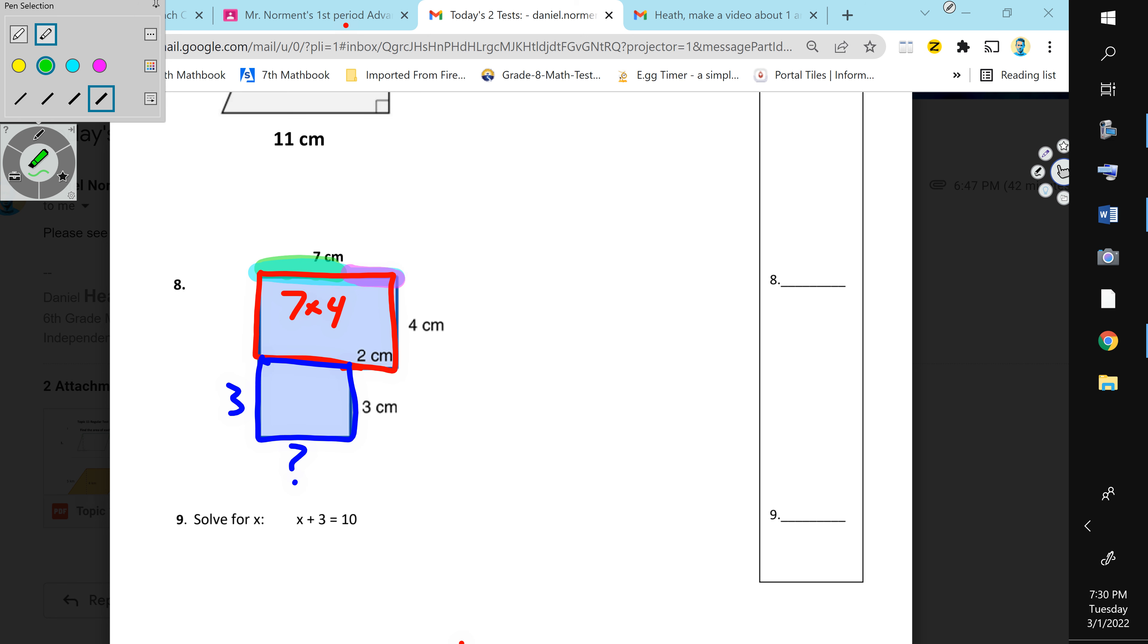Whenever you take two and subtract it from that, that's going to leave you with this part right here. I'm going to put it in green. And that part, seven minus two, is going to be five.